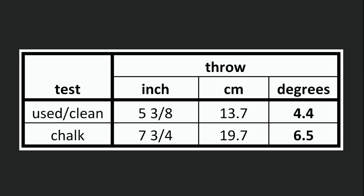The used balls had less throw — 4.4 degrees — than the new out-of-the-box balls tested earlier, which threw about 5.8 degrees. A chalk smudge at the contact point created about 50% more throw than normal for this test. The cling effect can be even greater at other cut angles and speeds.